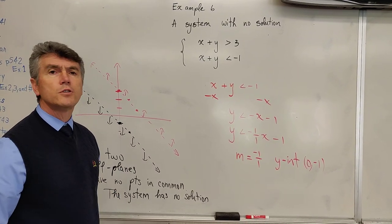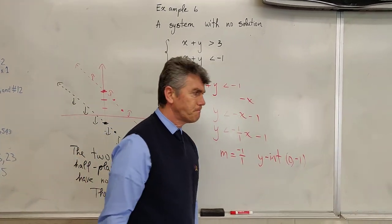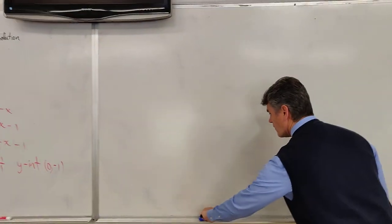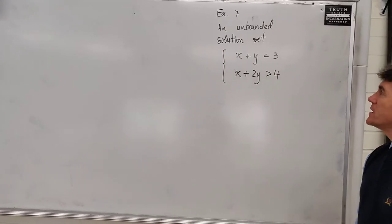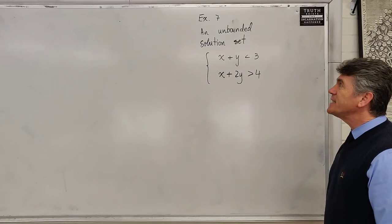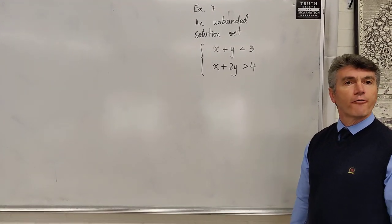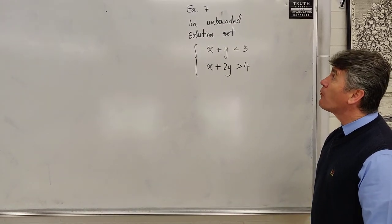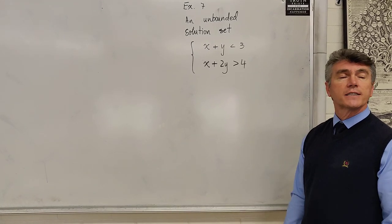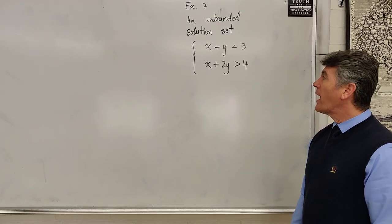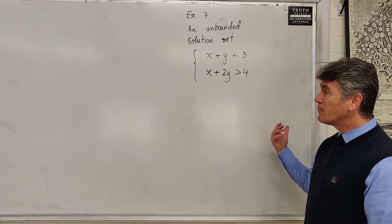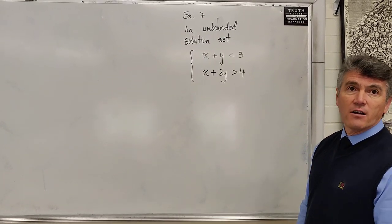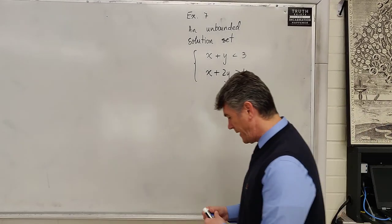We now move on to example 7. In example 7, we are going to talk about an unbounded solution set. What that means is not the rectangular form of a polygon that you are familiar with, like in the first example we had a triangle. In the second example that we did, we had a graph that was bounded above by a line and below by a parabola. This graph is not going to have boundaries. Let's take a look.